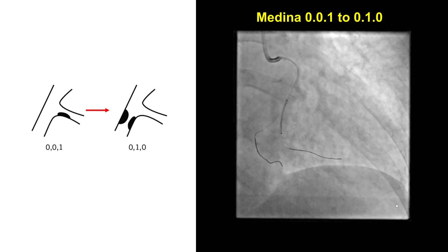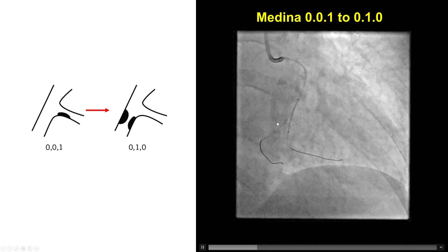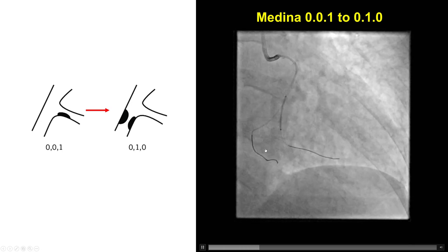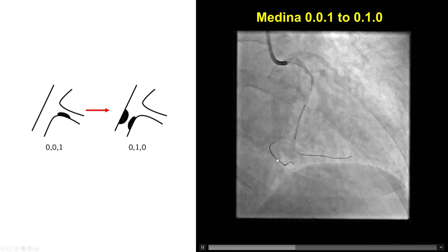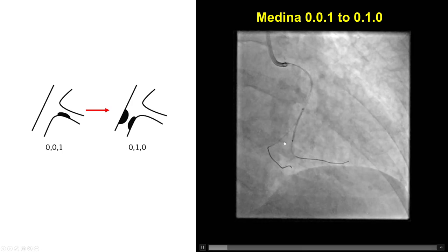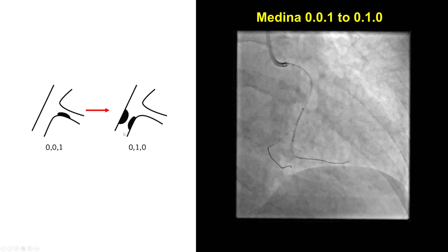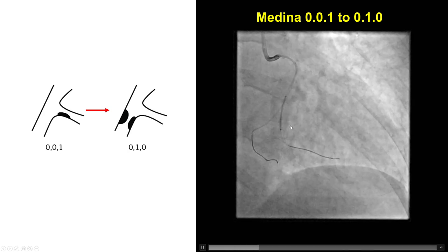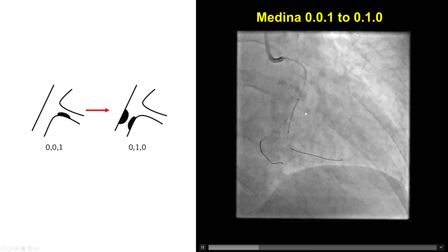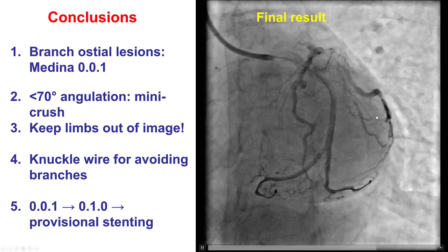We finally changed our plans. Instead of using the mini-crush technique, we reconsidered. This was a Medina 0-0-1 side branch bifurcation, but looking at the size of the OM2 versus the distal circumflex, the OM2 is actually larger than the distal circumflex. So one can argue that the main vessel is the mid-circumflex going into the OM2, and the distal circ is actually the branch. Thinking in those terms, this becomes a 0-1-0 bifurcation, and provisional stenting is the best approach — which is exactly what we did. A 2.5 mm stent was deployed, followed by the proximal optimization technique, achieving a nice final result.